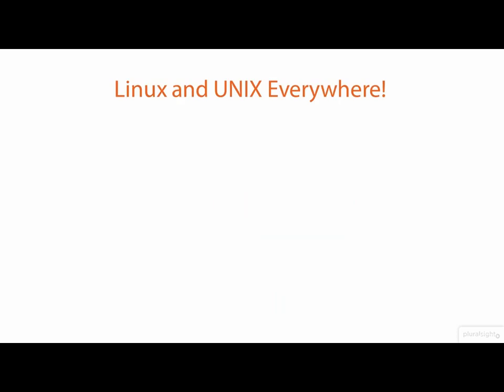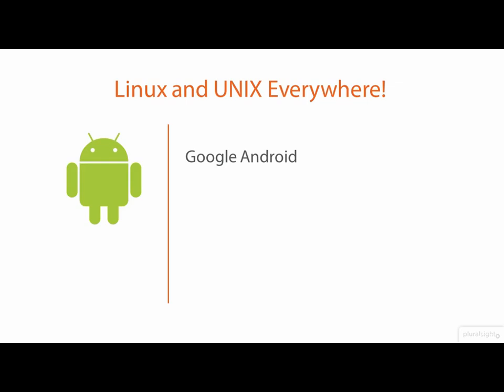However, there are a few interesting examples of a distro following its own unique path. Some specialized Linux distributions, such as Google's Android, use a modified Linux kernel that is entirely based on the original Linux kernel and uses a mix of traditional and proprietary tools. The Android mobile operating system is basically Linux — you might have Linux running in your pocket right now.